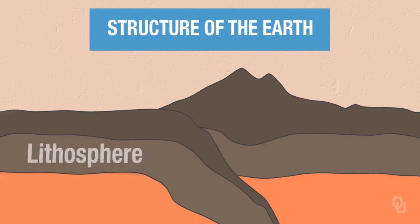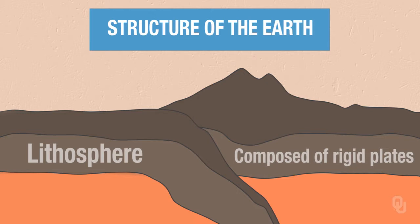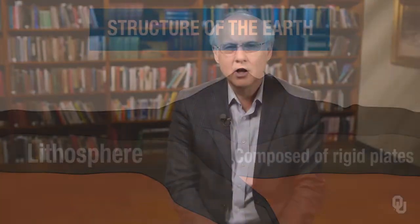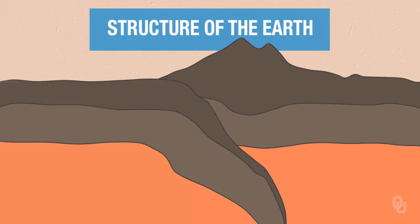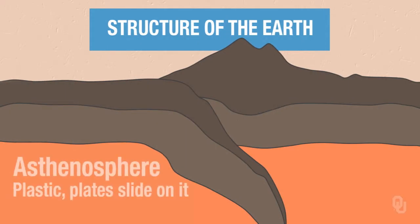The first is the lithosphere, which is composed of rigid plates — the rigid plates of plate tectonics that move across the globe. So if the plates are moving, what do you need for the plates to move? They have to slide on something, and it would be much easier if there was some lubrication. That lubrication is provided in the asthenosphere. It's plastic, and the plates slide on it.